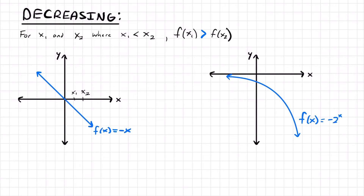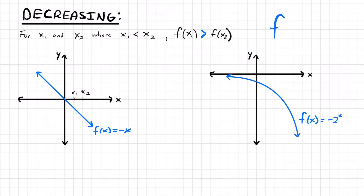The same is true for negative 2 to the power of x, an exponential function similar to the increasing one we looked at, except it is decreasing in the y direction as we pick larger values of x. As we move from left to right along our function, we move in the downward direction. A decreasing function has a negative slope, which means the first derivative of a decreasing function would be negative.